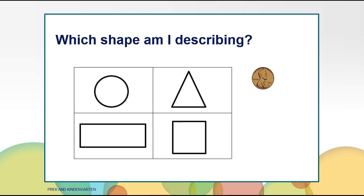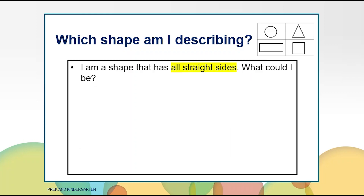You are going to use this chart you made with the four shapes on it and your one counter. I'm going to read you some clues. As I read the clues, I want you to listen and put your counter on the shape you think I am describing. The first clue is: I am a shape that has all straight sides. What could I be? Put your counter on the shape you think I am talking about.